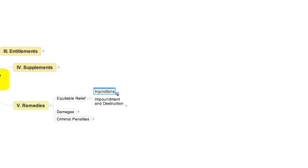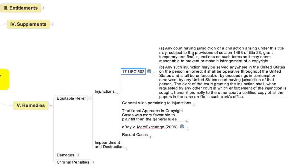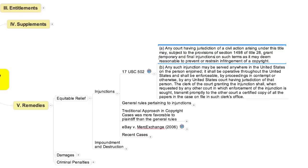Statutory authority for the issuance of such injunctions is contained in Section 502 of the copyright statute, which is set forth on your screen. As you can see, Section 502 provides that, quote, any court having jurisdiction of a civil action arising under this title may grant temporary and final injunctions on such terms as it may deem reasonable to prevent or restrain infringement of a copyright. Note the reference to temporary and final injunctions. Those adjectives allude to the fact that there are, in the American legal system, two species of injunctions: permanent injunctions and so-called preliminary injunctions.